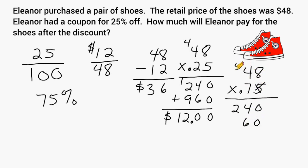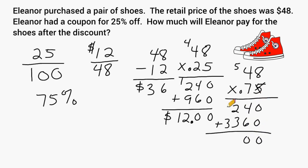We carry our 5, we multiply 4 and 7, which is 28, plus 5 is 33. Then we add up all of our columns to see what our total is. This is a 0, 4 and 6 is 10, this column is a total of 6, and the last column is 3. Our decimal point would go in this position. So by multiplying 48 by 75% written as a decimal, that will give us what price Eleanor will have to pay for the shoes after a 25% discount is applied to the price.